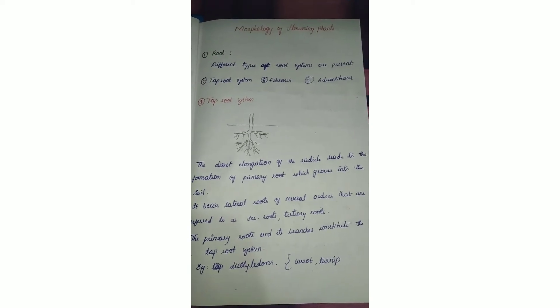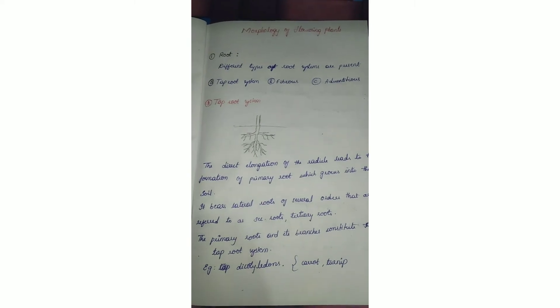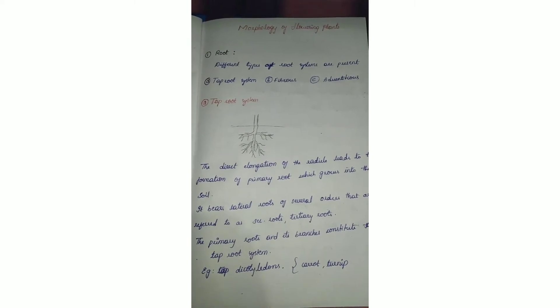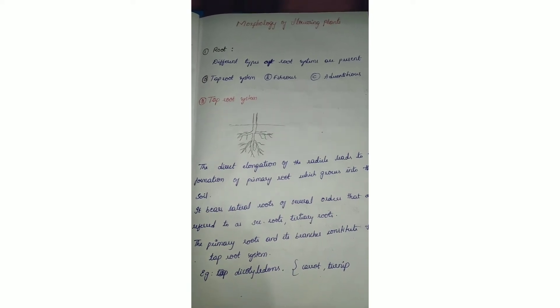The primary root grows into the soil and later produces further roots from the main axis only.